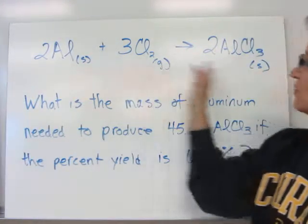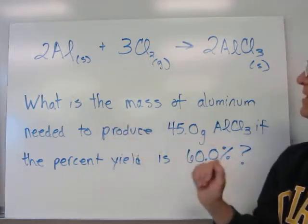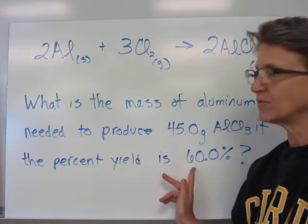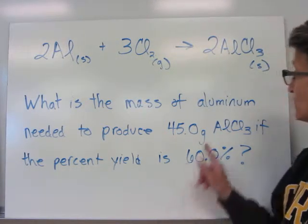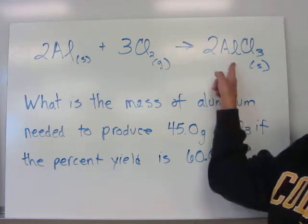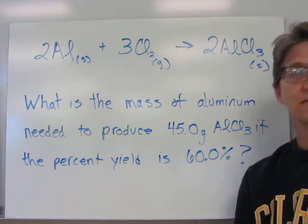So I have a balanced equation, and I'm told that the percent yield is 60%. The question says, what is the mass of aluminum needed to produce 45 grams of aluminum chloride if the percent yield is 60%?